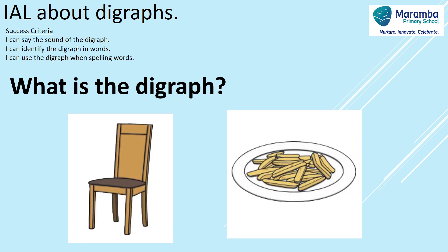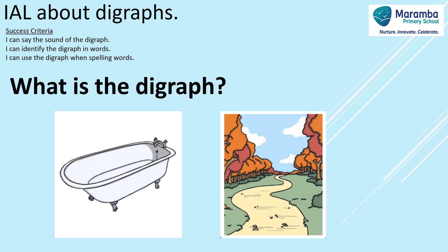What about these two pictures? What are the digraphs on these? Great job — 'ch' for chair, and 'ch' for chips. What do you think the digraph might be for these next pictures? We have a bath and we have a path. That's right — t, h makes 'th'. It's the soft sound this time.